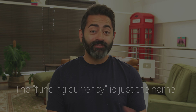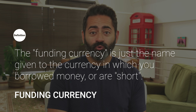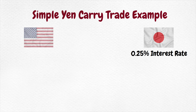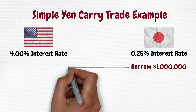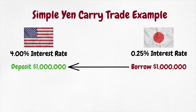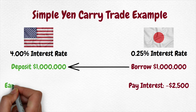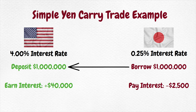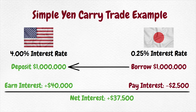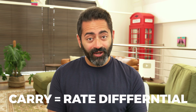A yen carry trade is simply when you execute a carry trade and the funding currency is the yen. The funding currency is just the fancy way of saying the currency in which you borrowed money, or are short to begin with. So let's say that interest rates in Japan are super low, like 0.25%, and interest rates in the United States in a savings account are 4%. If we borrowed the equivalent of 1 million US dollars in Japan and put it in the US savings account, we'd be paying 0.25% — which on $1 million equals $2,500 — but we would be earning 4%, or $40,000. We'd be making $37,500 every year, a return of 3.75%. It is this interest rate differential that is the carry.